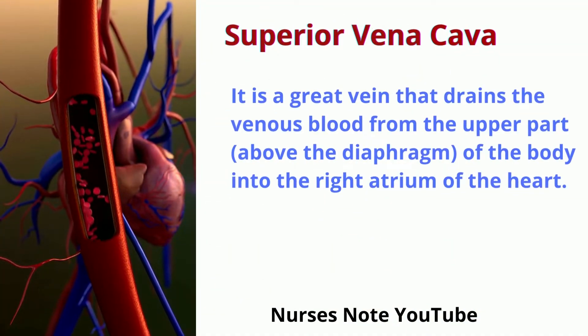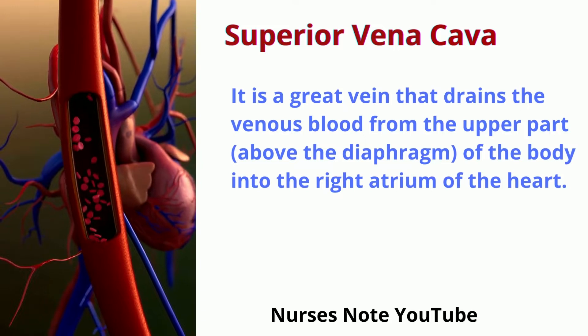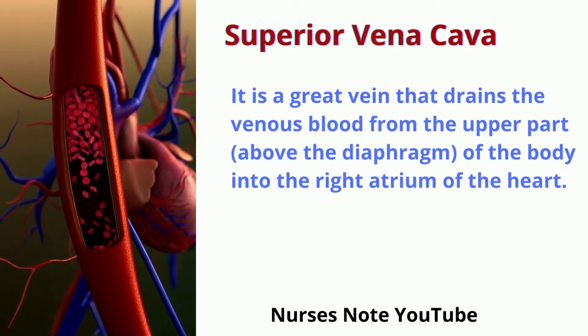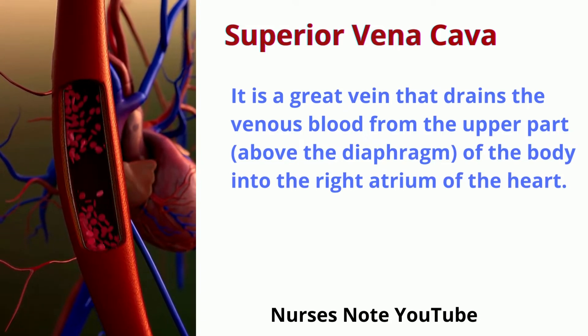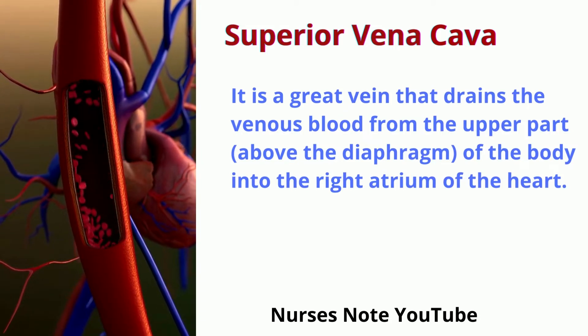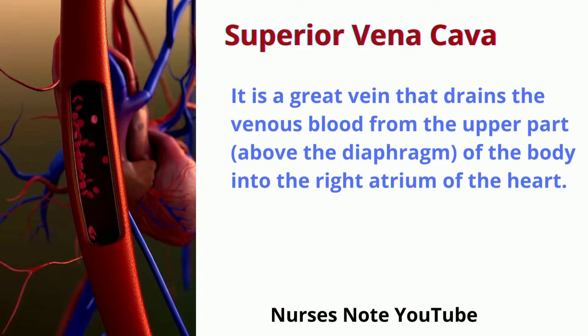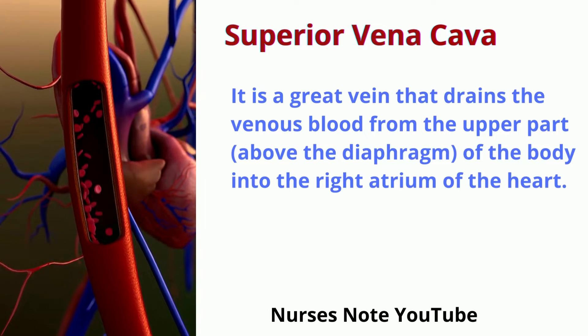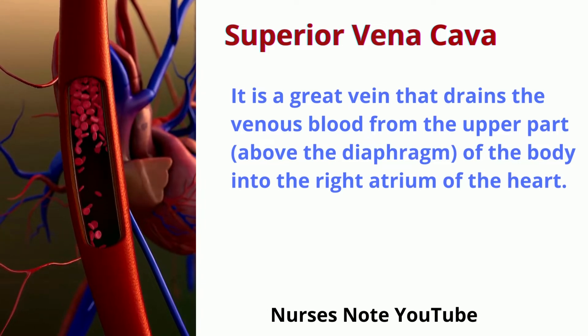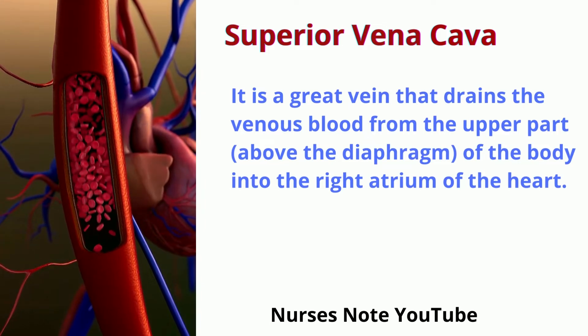The Superior Vena Cava is a great vein that drains the venous blood from the upper part of the body, above the diaphragm, into the right atrium of the heart.